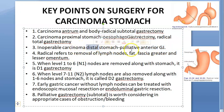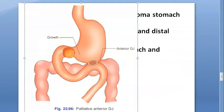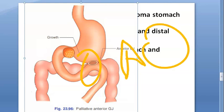For inoperable carcinoma of the distal stomach, palliative anterior gastrojejunostomy (GJ) is performed to relieve vomiting. There is an anastomosis of a jejunal loop to the stomach in the pre-pyloric region. Anterior is preferred over posterior because if posterior is done, the growth may involve the GJ stoma early, resulting in stomal obstruction.